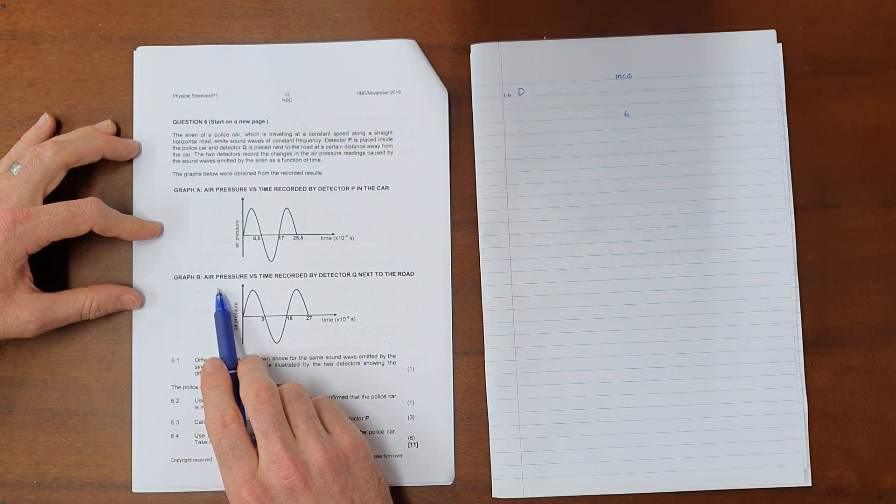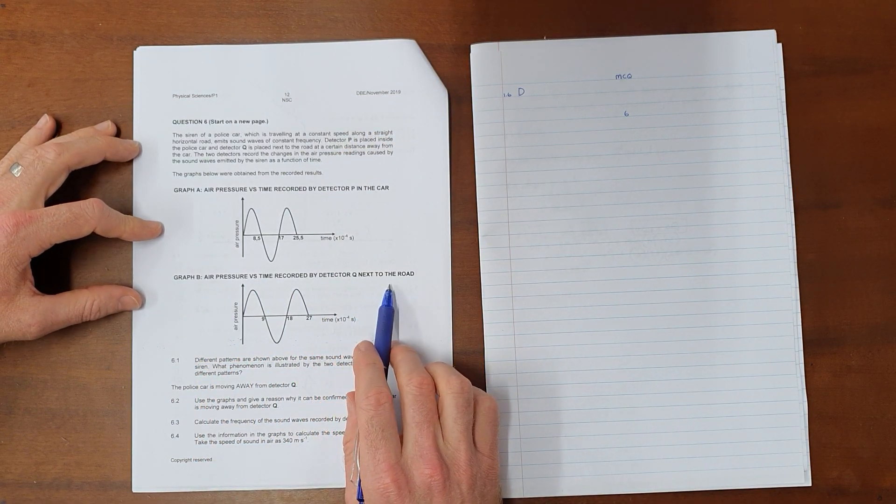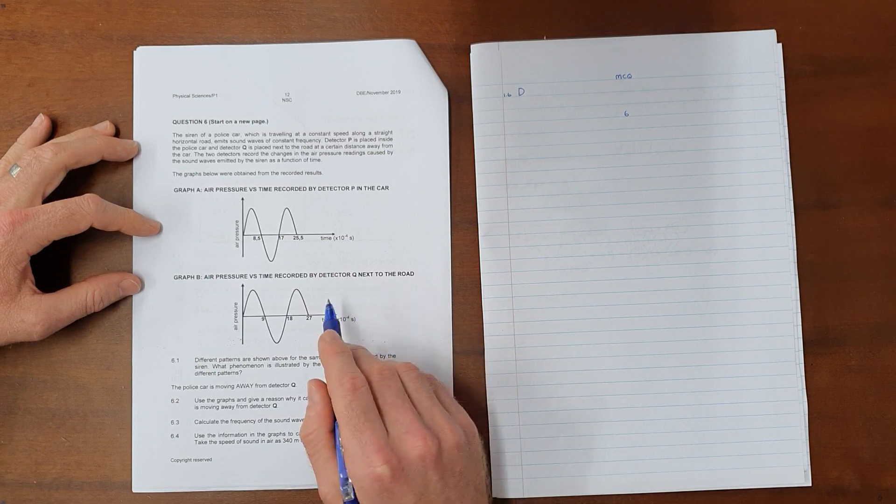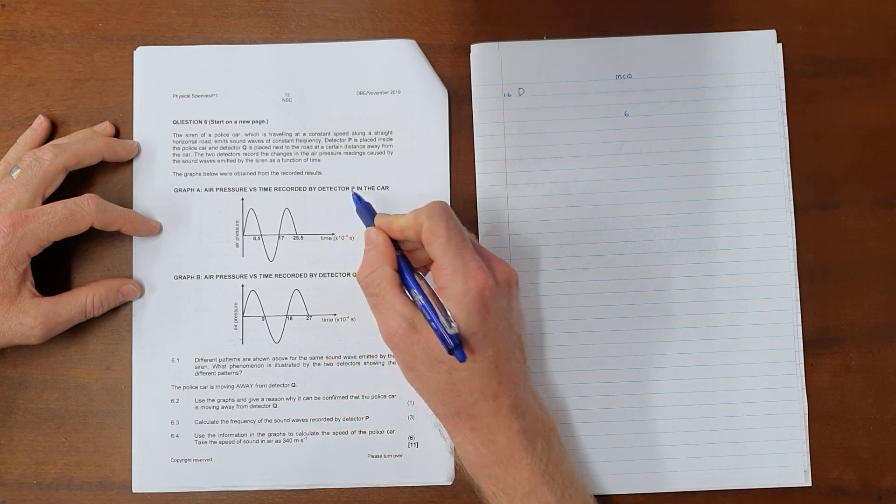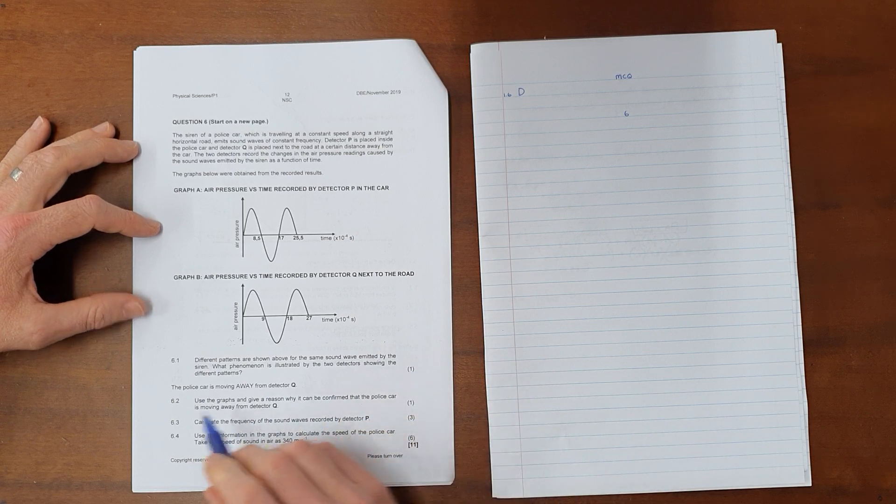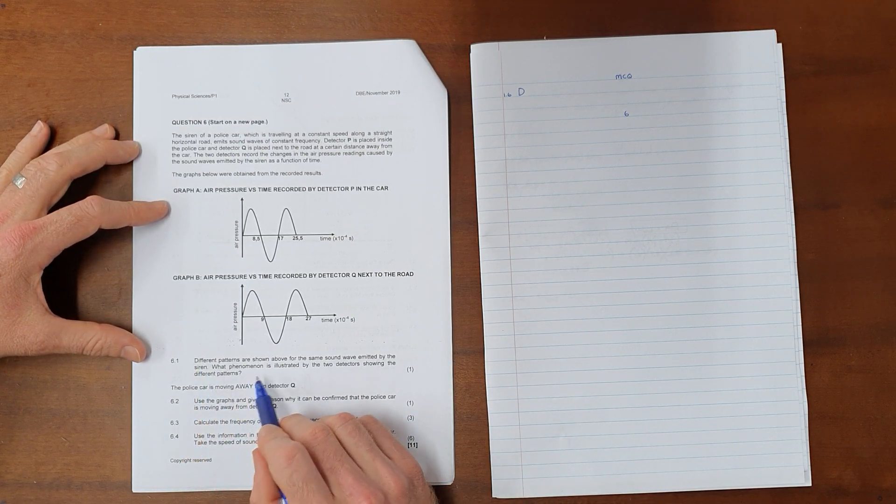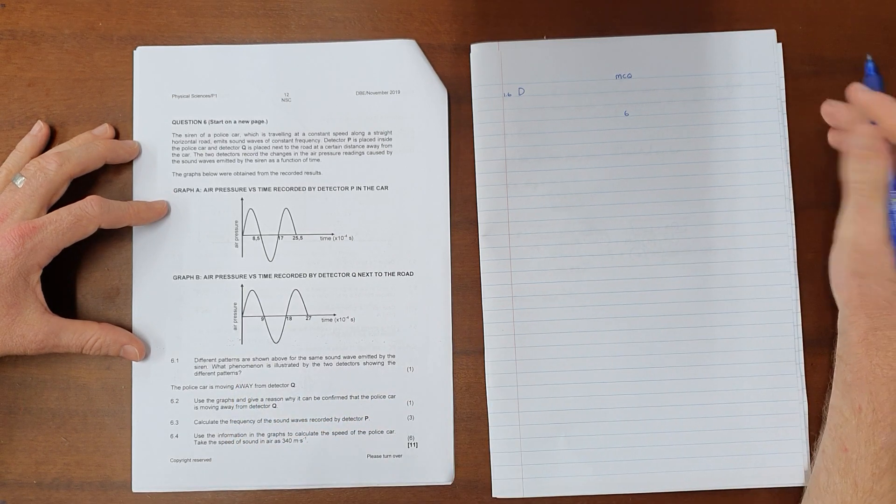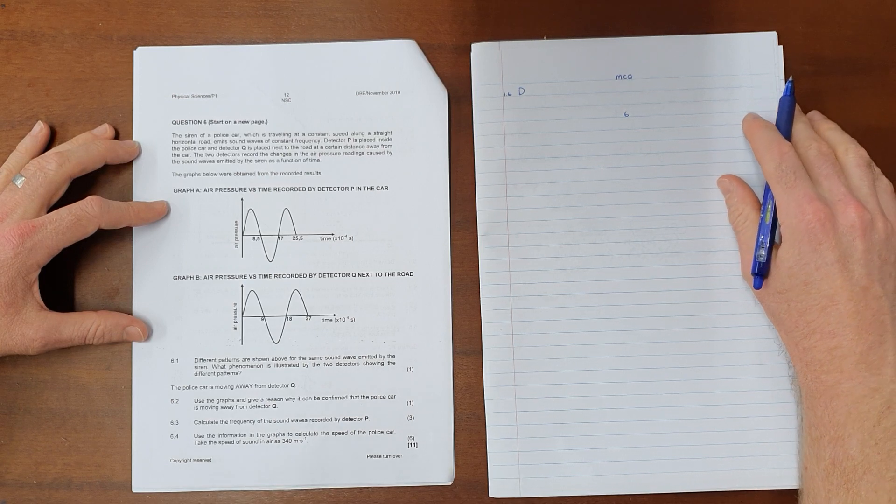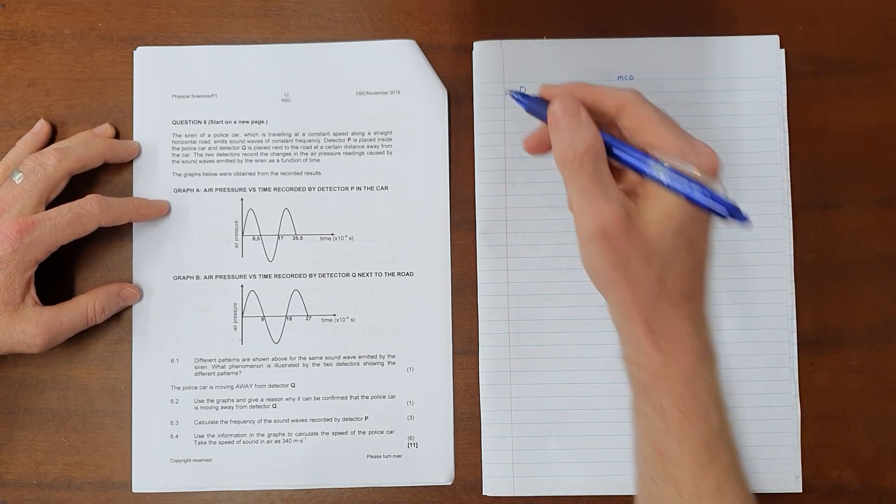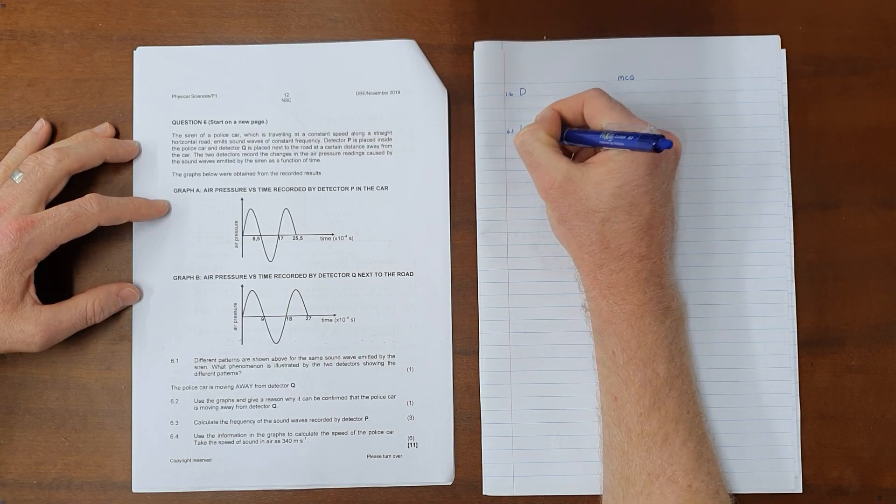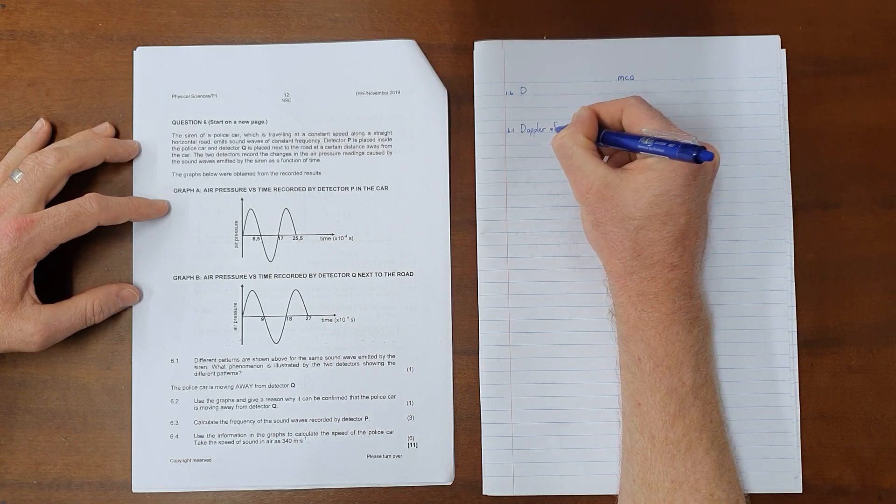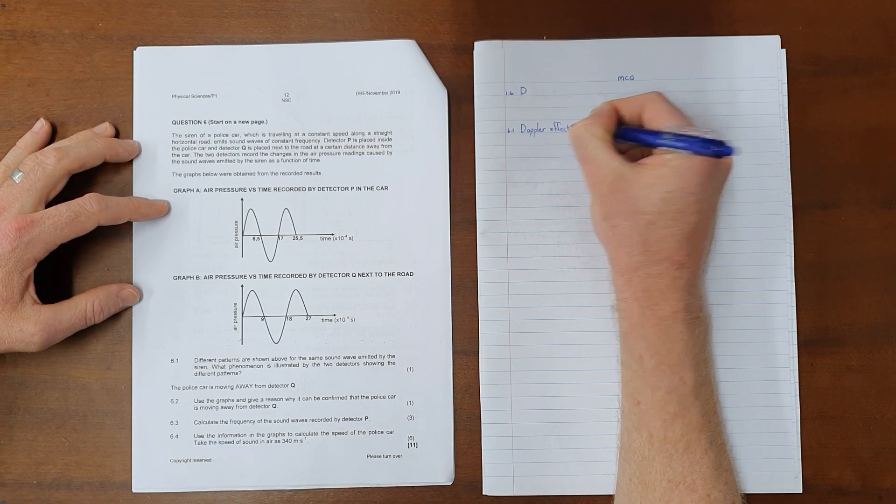Graph B, air pressure versus time recorded by detector Q next to the road. This is going to be affected by the Doppler effect because there's relative motion between the car and this detector that is placed next to the road. Question 6.1. Different patterns are shown above for the same sound wave emitted by the siren. What phenomenon is illustrated by the two detectors showing different patterns? The phenomenon here is obviously the Doppler effect. The Doppler effect is the perceived change in frequency as a result of relative motion between the source and the observer.